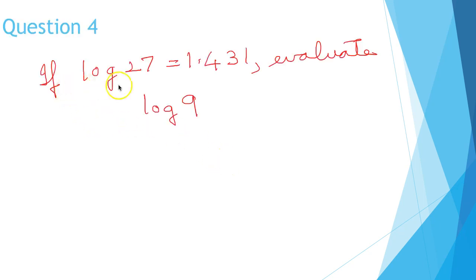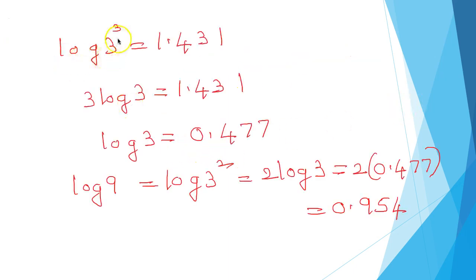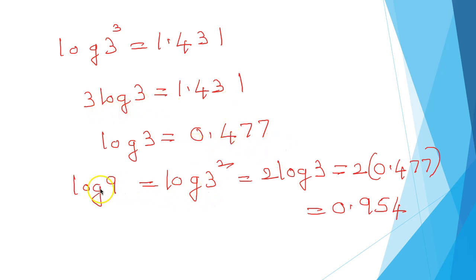If log 27 equals 1.431, evaluate log 9. Log 3 cubed equals 1.431, so 3 log 3 equals 1.431, meaning log 3 equals 1.431 divided by 3, which is 0.477. Now log 9 equals log 3 squared, that is 2 log 3, which is 2 times 0.477, giving 0.954.